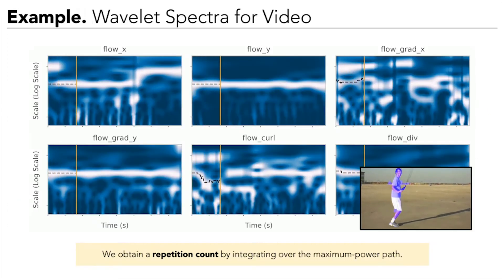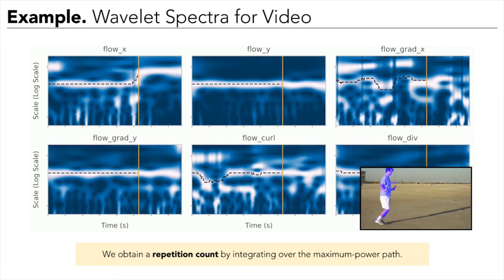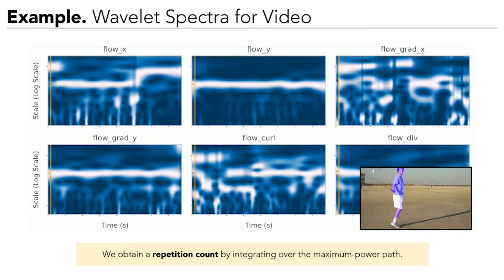Here we show six wavelet spectra for an example video. The vertical flow and curl produce the strongest response, as expected.